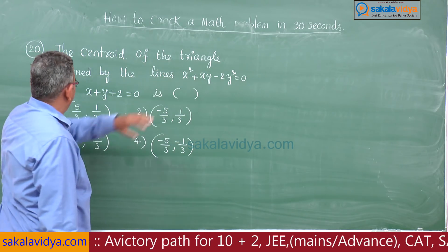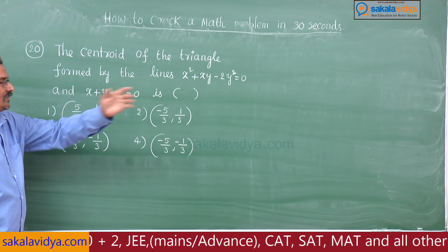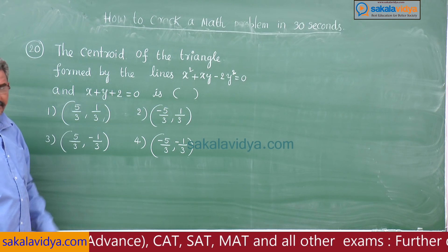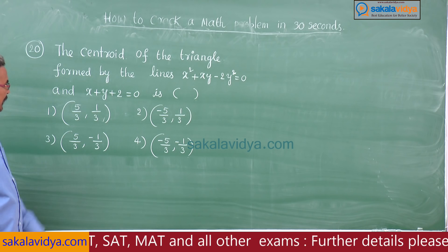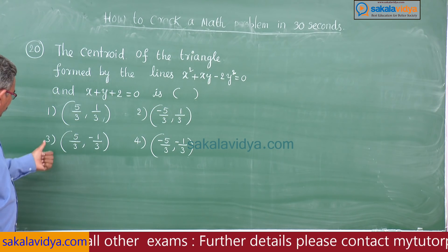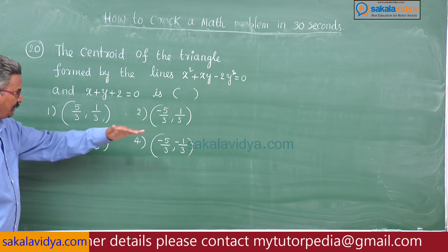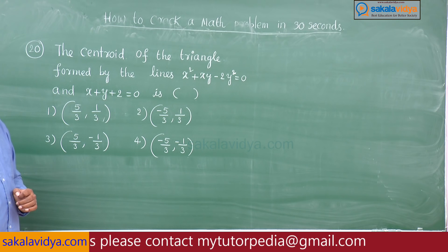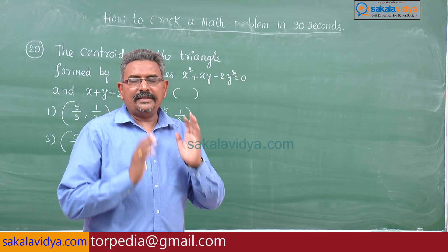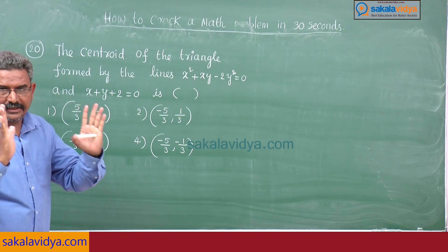20th problem: The centroid of the triangle formed by the lines x² + xy − 2y² = 0 and x + y + 2 = 0 is — first option: (5/3, 1/3), second option: (−5/3, 1/3), third option: (5/3, −1/3), fourth option: (−5/3, −1/3). I will tell you a very amazing shortcut for this one — using the options we can solve this problem very easily.